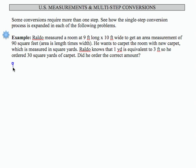So what we're trying to find out here is 90 square feet, which we can write as 90 sq ft, is how many square yards. This type of conversion can be a little confusing because it seems like Raldo did the right thing. 1 yard is 3 feet, so he divided 90 by 3 to get square yards.